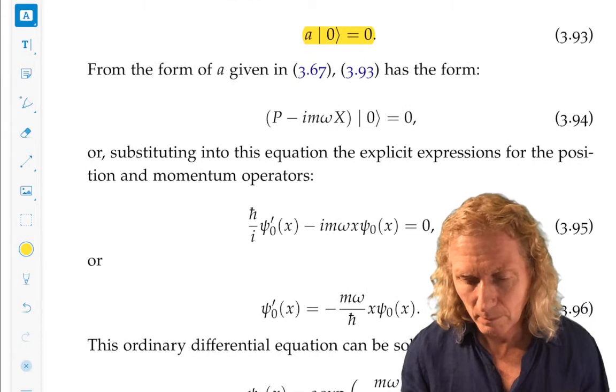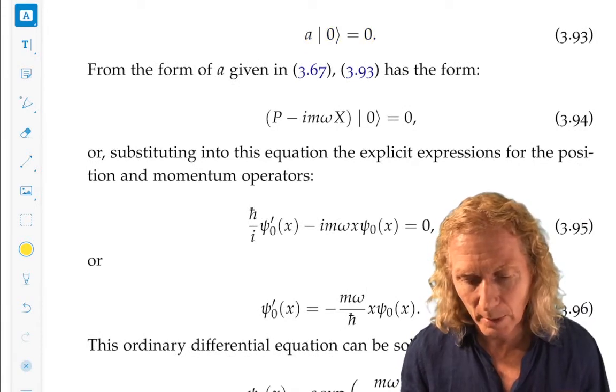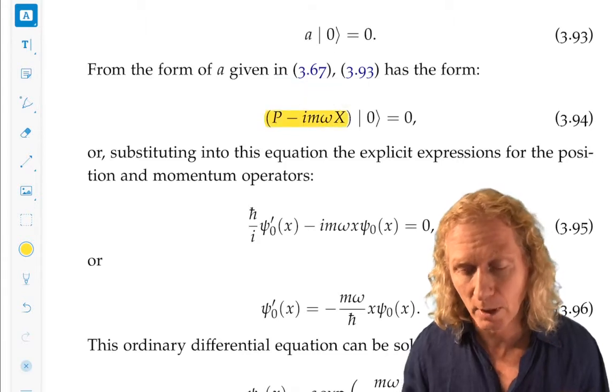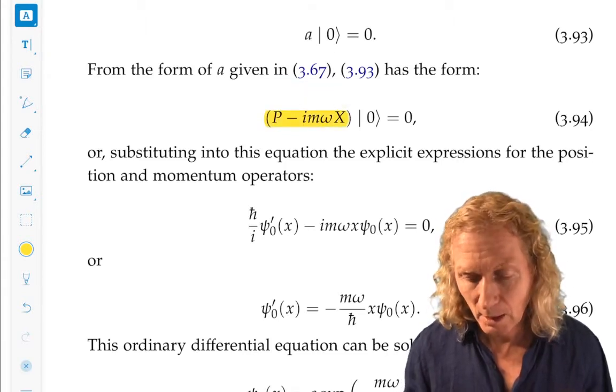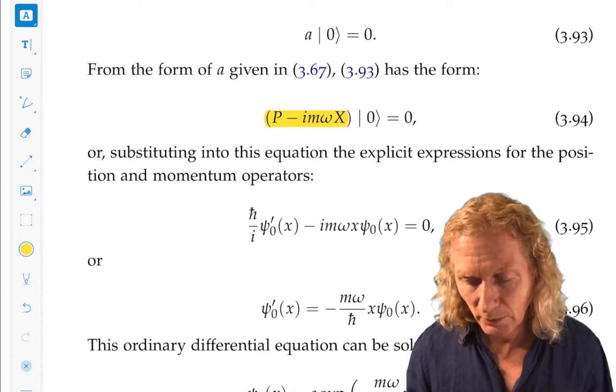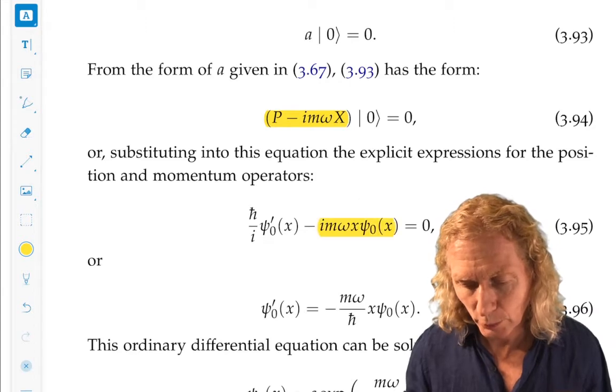What is a? A is p minus i m omega x. p and x are operators acting on the ground state. This ground state, let's call it psi zero of x in line with solutions of a differential equation.